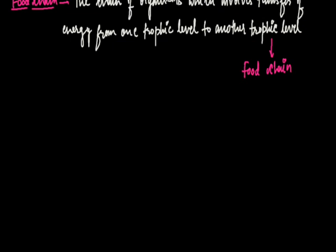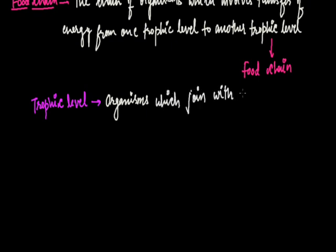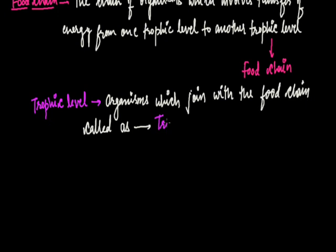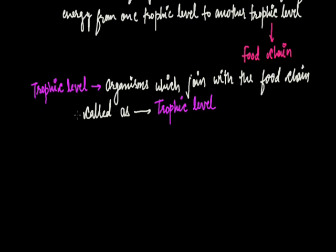Now, what is a trophic level? Those organisms which join the food chain are termed as trophic levels. So organisms which join the food chain are called trophic levels. For example, in a food chain there can be 4 to 5 kinds of trophic levels present.